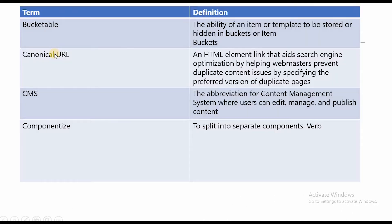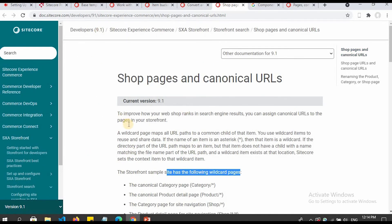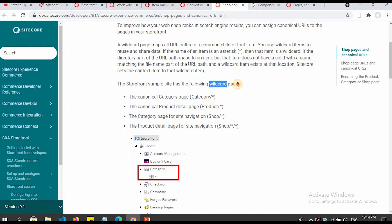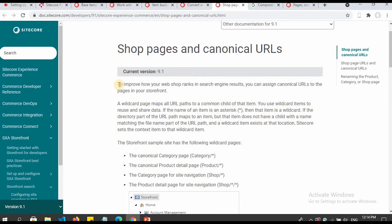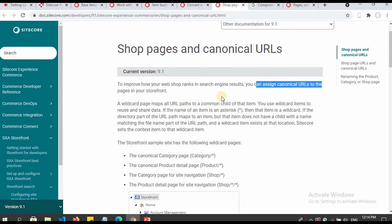What is a canonical URL? It's an HTML link element that aids search engine optimization by helping webmasters prevent duplicate content issues by specifying the preferred version of duplicate pages. If you want to read more, you can go to the official Sitecore site — the link will be in the description. To improve how your web shop ranks in search engine results, you can assign canonical URLs to pages in your storefront.